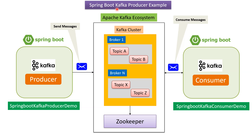In this video tutorial I will explain a Spring Boot Kafka producer example. Here you can see the Apache Kafka ecosystem. An Apache Kafka cluster has a number of brokers and topics. The Spring Boot application name is 'Spring Boot Kafka Producer Demo' and it has a Kafka producer client. Using this Spring Boot application, we will see how to send messages to an Apache Kafka topic.